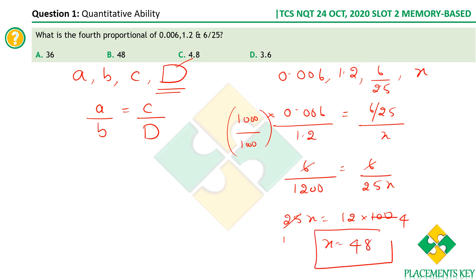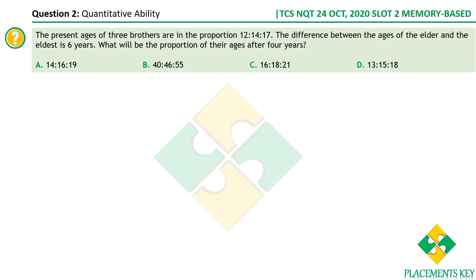Therefore if x = 48, the condition is satisfied: 0.006/1.2 = (6/25)/48. That is called the fourth proportional.